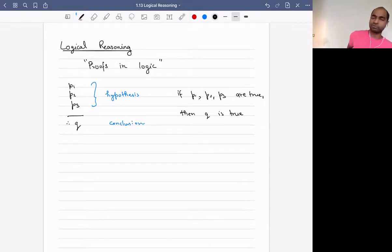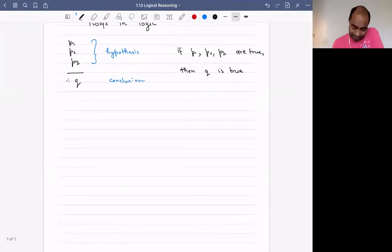So really proofs in logic are an implication. If you look at what you have here, it's saying if whatever are the hypotheses, all of them are true, then the conclusion is true. So it's like a meta implication. Here your P1, P2, P3 are themselves propositions. That's it. So let's look at some examples.